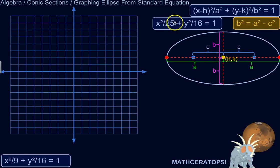So look at which number is bigger here. So if it's x² over some number, y² over some number, whichever is the bigger number, that's going to be a. So if a is below x, then it's a horizontal ellipse. If a is below the y, then it's vertical.